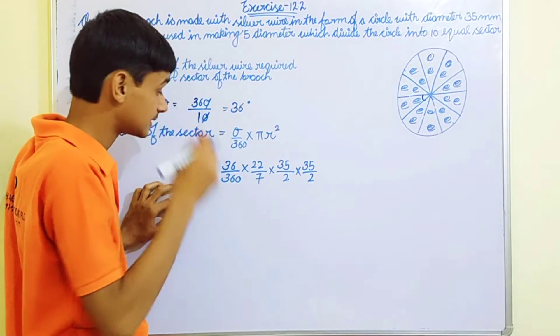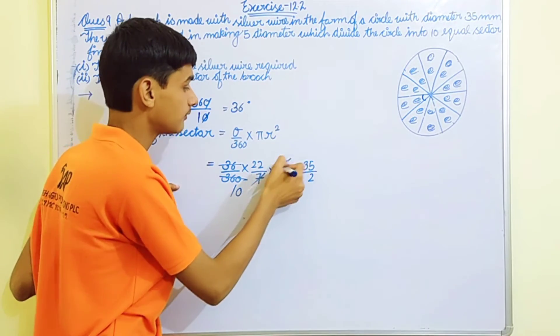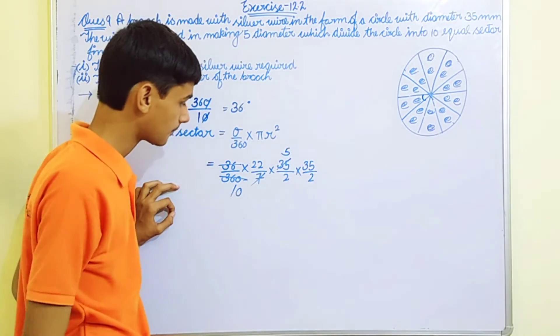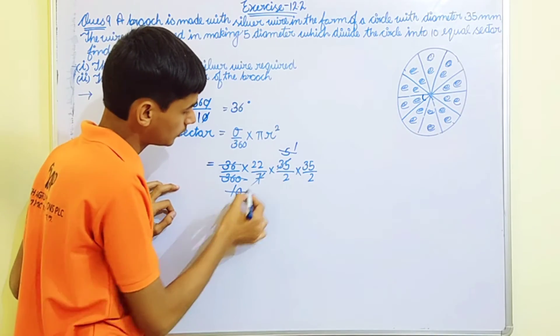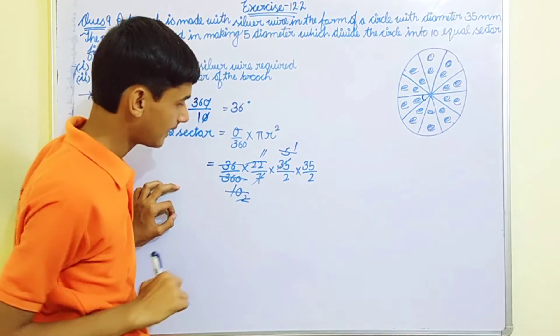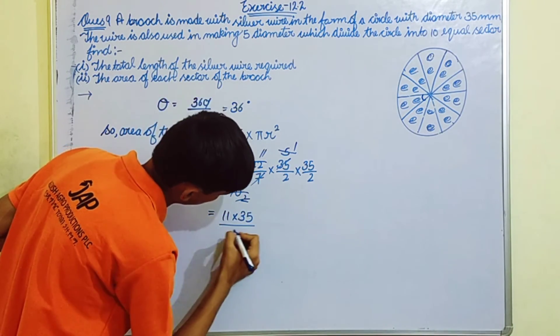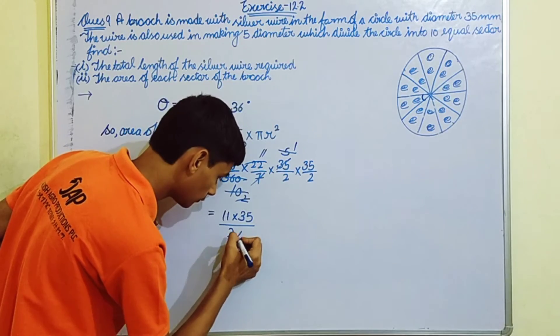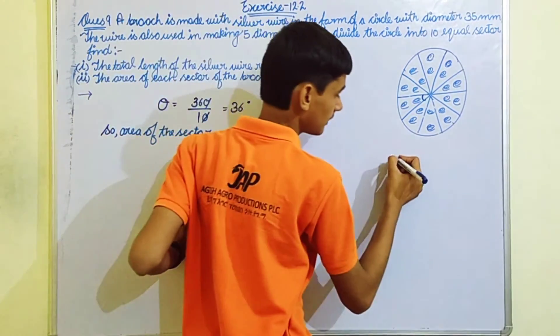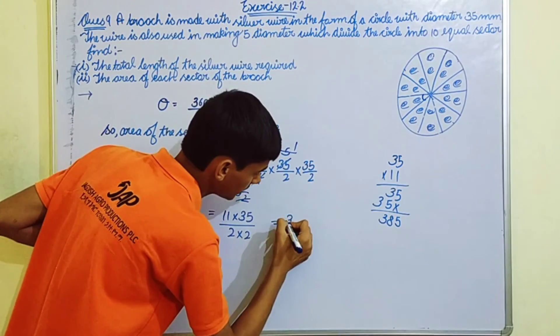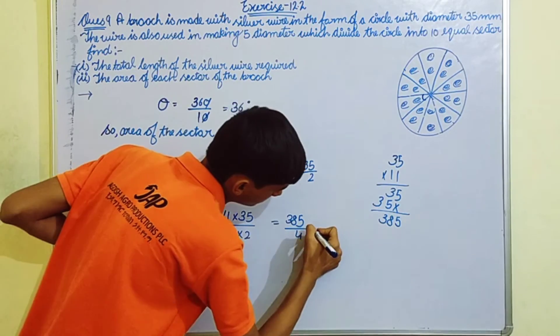7 remains, 35 becomes 5, then we get 11. Upper side we have 11 into 35 by 2 into 2. So 11 and 35 multiply to get 385 by 4.